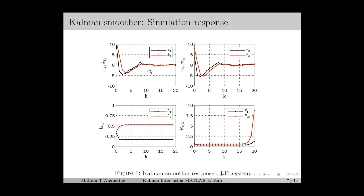Figure 1 shows the simulation response of the LTI system with the Kalman Smoother, which contains plots for the actual states and the estimated states, and the diagonal elements of the smoother gain Lsk and the Riccati matrix Pk|N. The plots for the diagonal elements of Lsk and Pk|N show that Lsk and Pk|N converge to some fixed matrices in steady state. From the plots of Pk|N, we can observe that the variance of both x1k and x2k converge to some value around 0.5.